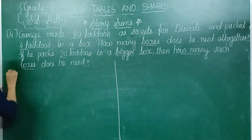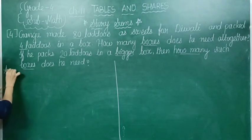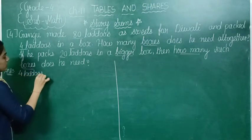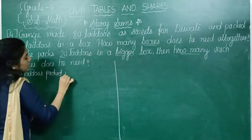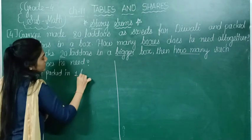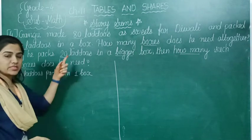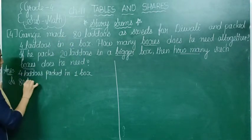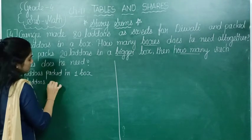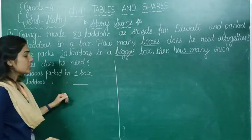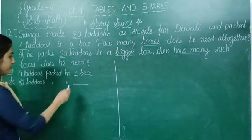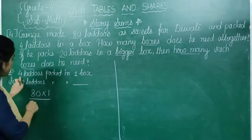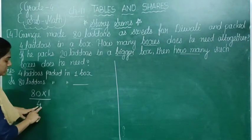For this we need to prepare a statement like this: 4 laddus are packed in one box. So 80 laddus are packed in how many boxes? Here we do the cross multiplication method — 1 will multiply with 80 and we will divide it by 4.